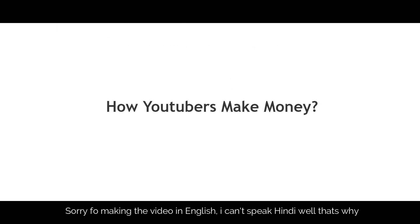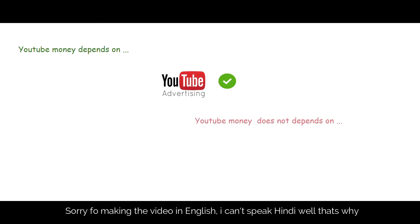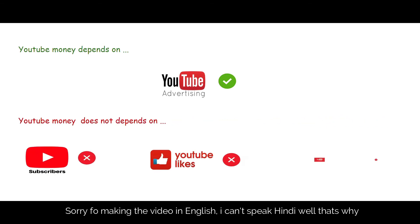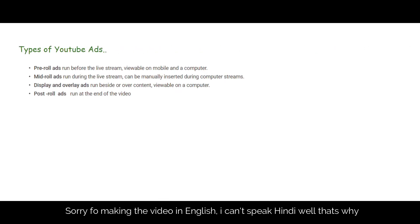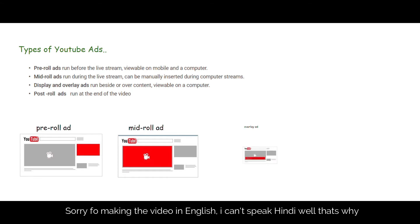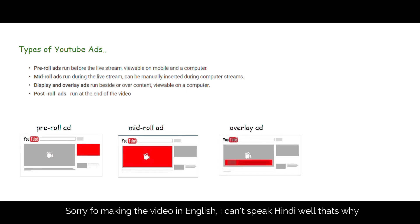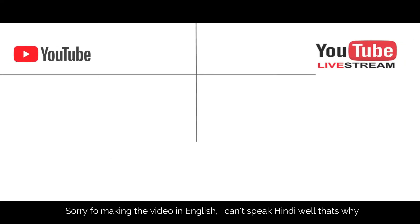First of all, let me tell you how YouTubers make money. YouTube money is completely dependent on YouTube ads, but not on YouTube subscribers, likes, or comments. In YouTube there are four types of ads: pre-roll ad, mid-roll ad, overlay ad, and post-roll ad. Pre-roll ads are displayed at the starting of the video, mid-roll ads are displayed during the video, overlay ads are displayed during the video as a small card only shown on computers, and post-roll ads are displayed at the end of the video.